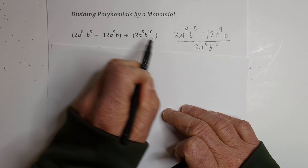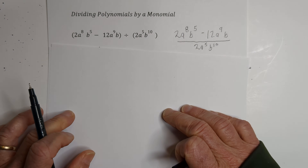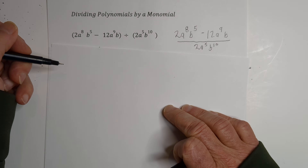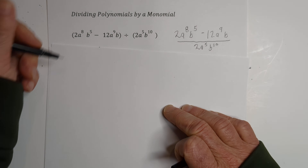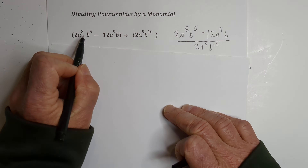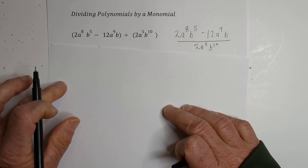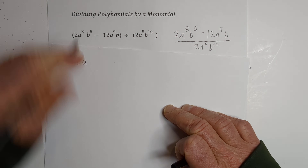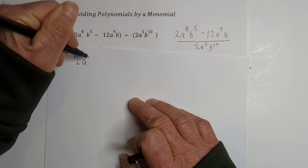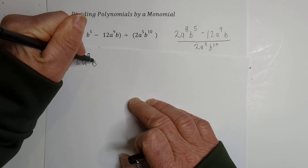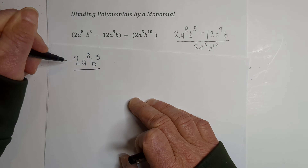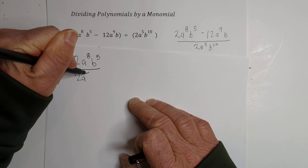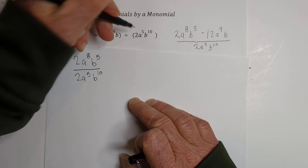There's a lot going on here. So step one, just to simplify it and make it not so daunting, is let's rewrite both of these as fractions. So we're going to go 2a to the 8th b to the 5th divided by 2a to the 5th b to the 10th.